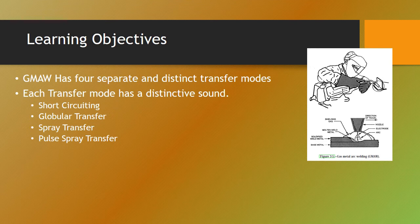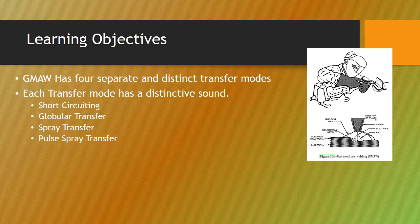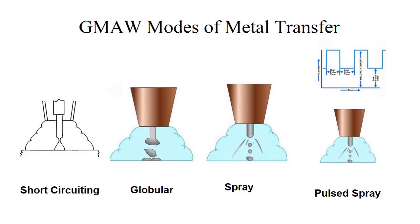When we're talking about gas metal arc welding modes of transfer, we're going to talk about short-circuiting, globular, spray, and pulse spray. Each one of these has some significant differences from the other modes of transfer.